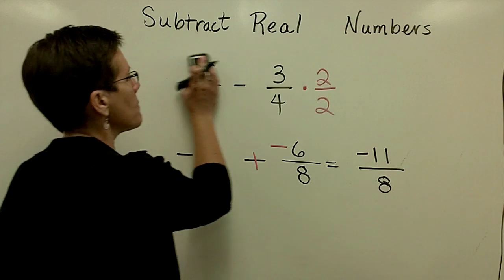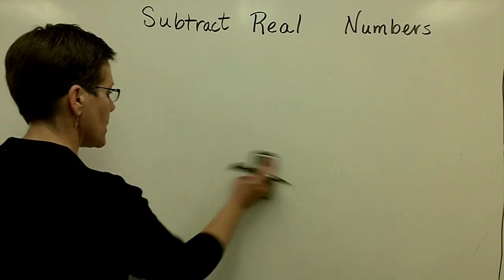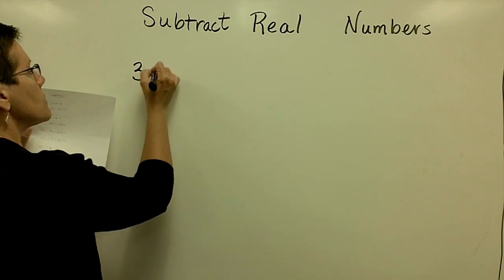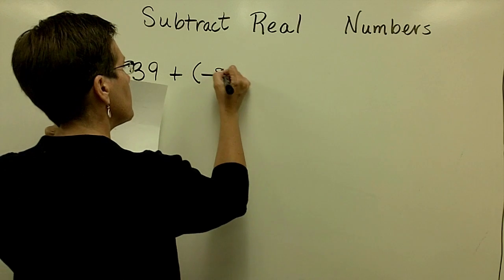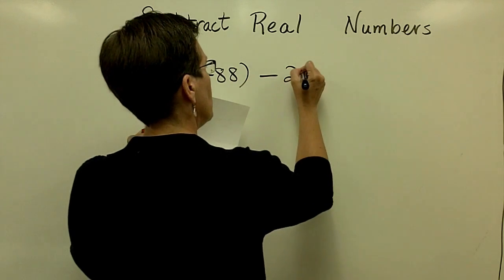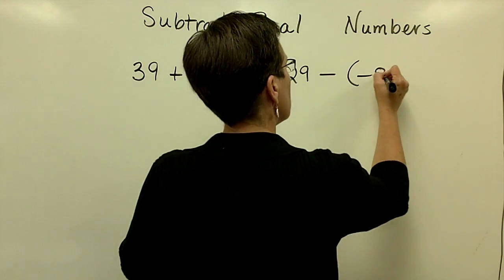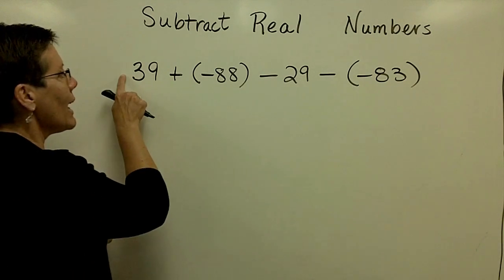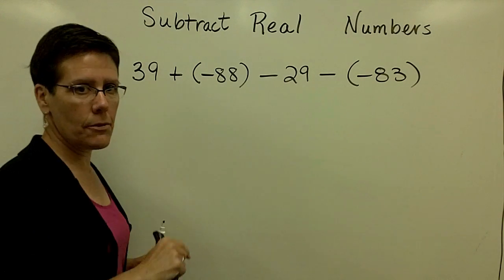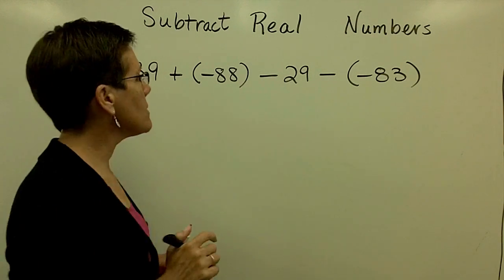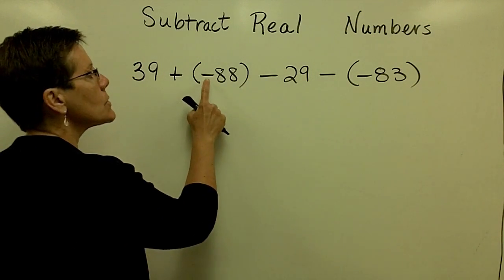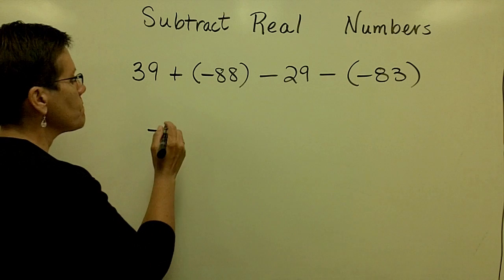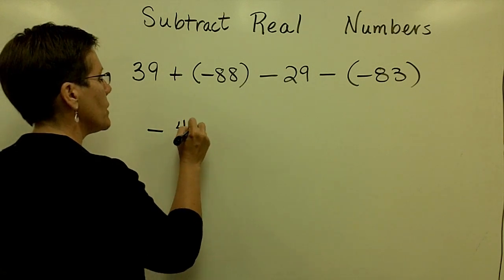Finally, if we have a subtraction problem and it has several terms in it, I would highly encourage that you work from left to right, especially if it's got some addition and subtraction. Let's work this one from left to right. First, let's go ahead and take this positive 39 and this negative 88 and add them. They have opposite signs, so I have to subtract their absolute values. This one has more pull. So, my answer is going to be a negative and it looks like it's going to be a negative 49.